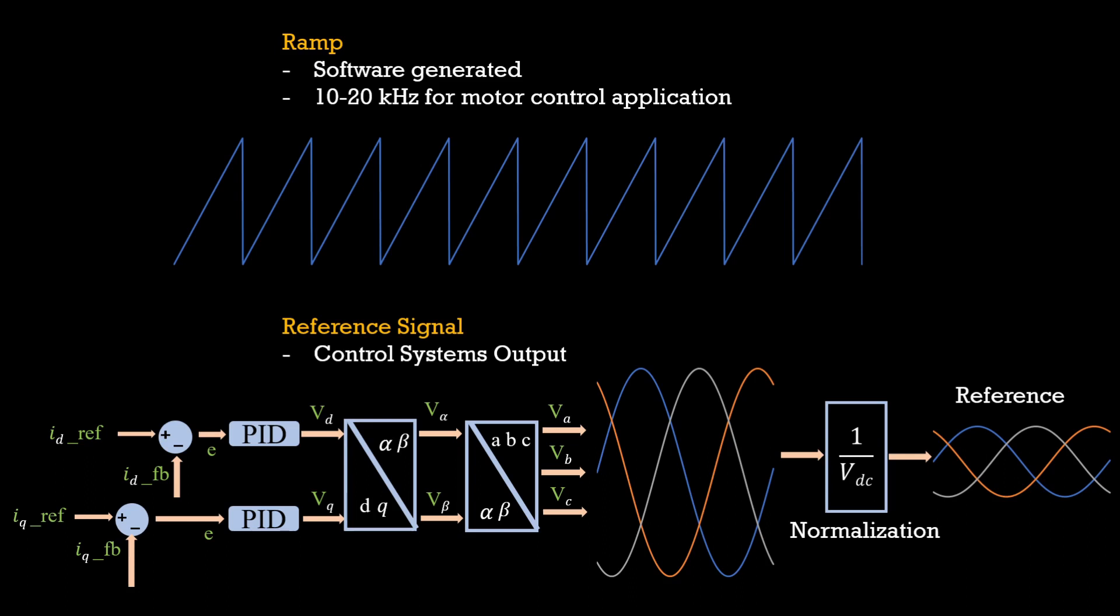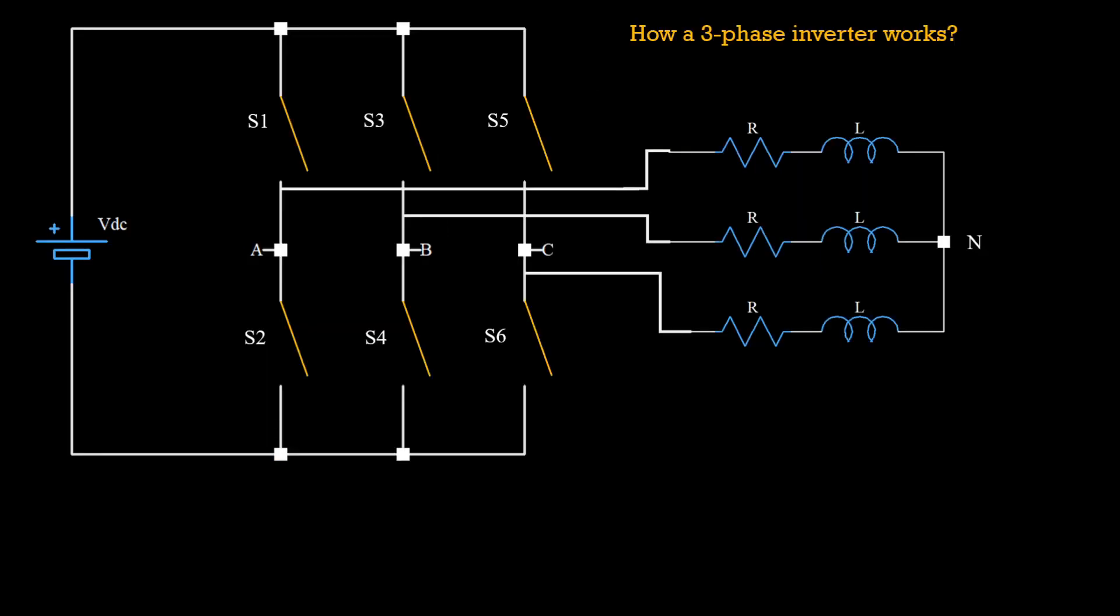We saw that the ramp is generated through microcontroller and its frequency should be 10 to 20 kHz for motor control application. Secondly, this reference signal comes from the control systems. Now, we need to see how to apply the low pass filter. To see that, we need to understand how this three phase inverter works. We will replace the motor with an RL load.